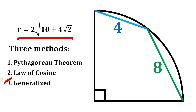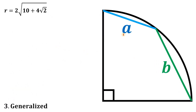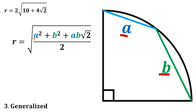Now for the third solution: the generalized formula for the radius of a quarter circle. Given chord lengths a and b, the radius is: r = √(a² + b² + ab√2/2). This result can be derived using either the Pythagorean theorem or the law of cosines — either approach yields this formula.